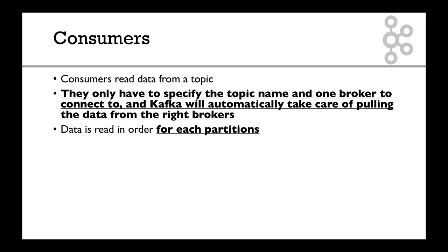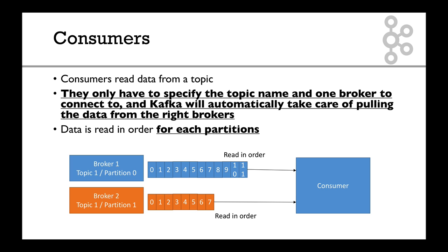Data is read from each partition of the topic, but Kafka is really smart — you don't have to worry about it. You just say 'I want to connect to this topic,' and that's it, you'll read from it. In the graph, we have two partitions and one consumer. The consumer reads data in order for each partition. The consumer will consume data in parallel for partition 0 and 1, but within each partition the consumer will see message 0, then 1, then 2, then 3, and so on. So messages are read in order within a partition, but in parallel across partitions.